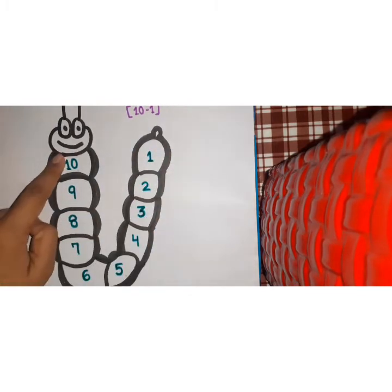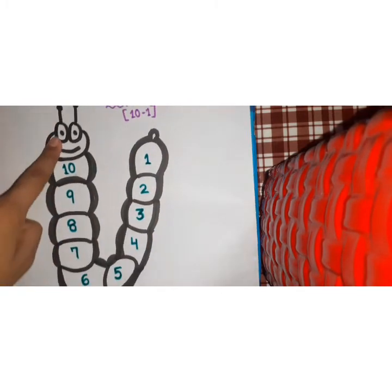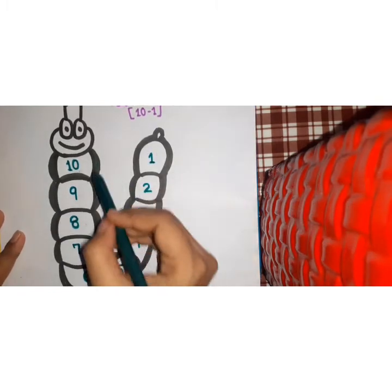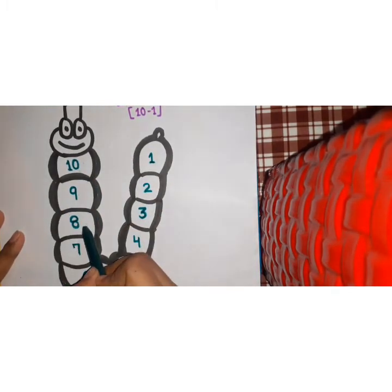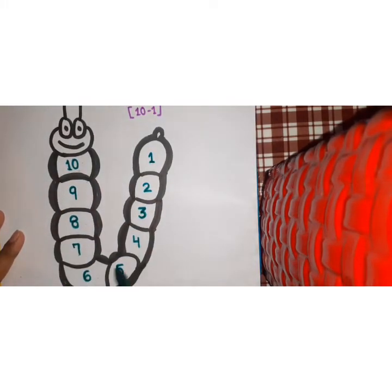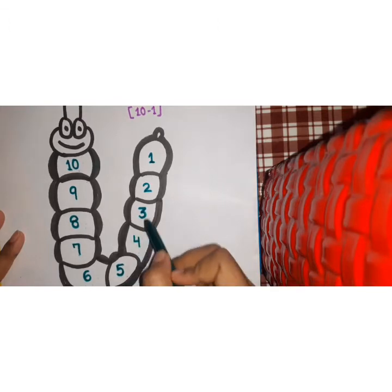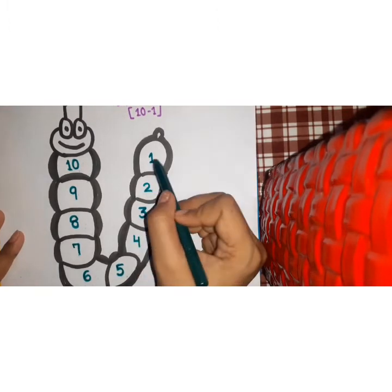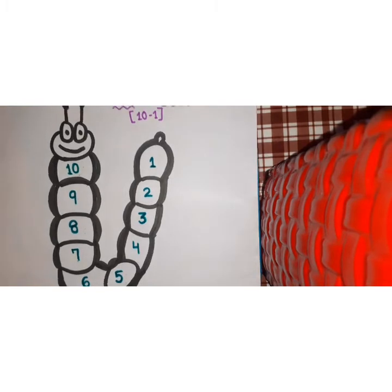1, 2, 10. But in reverse counting, we will go the opposite side. 10, 9, 8, 7, 6, 5, 4, 3, 2 and 1.